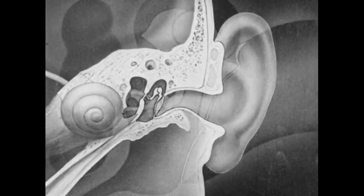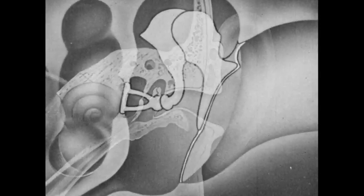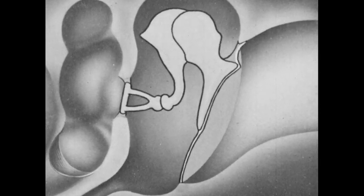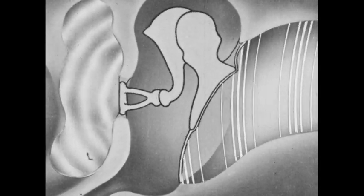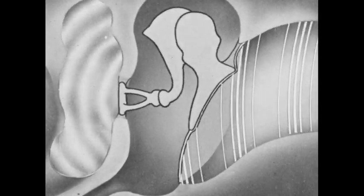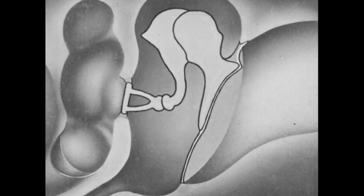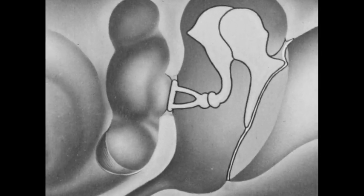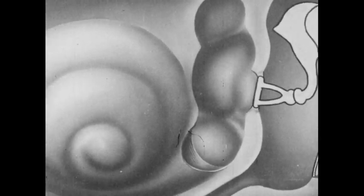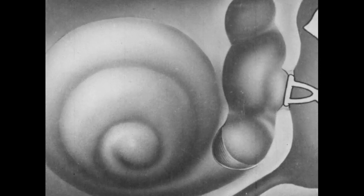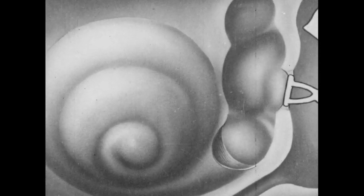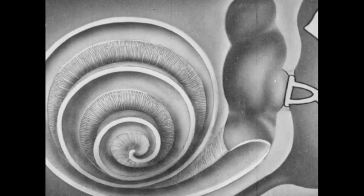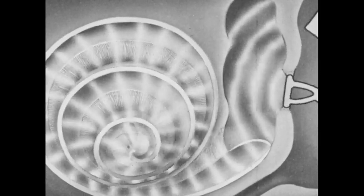Beyond the eardrum is a cavity called the middle ear. Here are located three small bones, which transmit the vibrations of the eardrum to the inner ear. The latter consists of a spiral-shaped cavity filled with a liquid in which the bones of the middle ear set up vibrations.